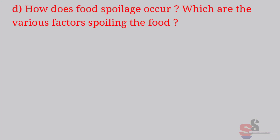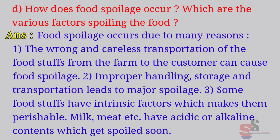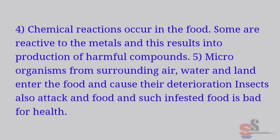D. How does food spoilage occur? Which are the various factors spoiling the food? Answer: Food spoilage occurs due to many reasons. First, wrong and careless transportation of foodstuffs from the farm to the customer can cause food spoilage. Second, improper handling, storage and transportation leads to major spoilage. Third, some foodstuffs have intrinsic factors which make them perishable. Milk, meat etc. have acidic or alkaline contents which get spoiled soon. Fourth, chemical reactions occur in the food and this results in production of harmful compounds.